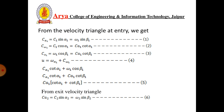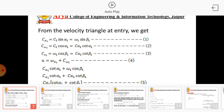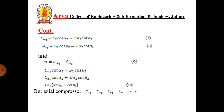From the velocity triangle, at entry: Ca1 = C1 sin α1 = W1 sin β1; Cw1 = C1 cos α1. U = Wx2 + C1 cos β1 = C1 cos α1 + C1 cos β1 (equation 5). At exit velocity: Ca2 = C2 sin α2 = W2 sin β2. Using simple mathematical relations from the velocity triangle, these equations are derived.